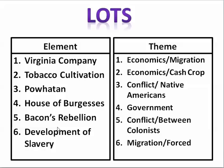Alright, we've got 1, 2, and 3 out of the way. We've got Virginia Company out of the way, Tobacco Cultivation, Power 10 — how all those concern the development of Virginia. And now we're on number 4, the House of Burgesses.